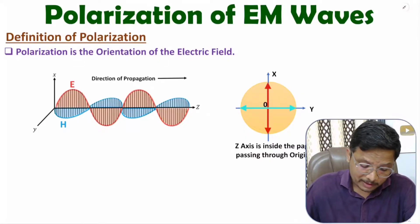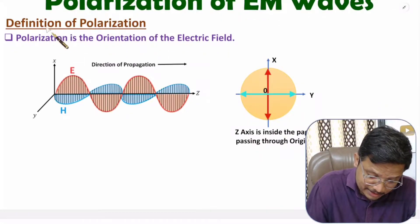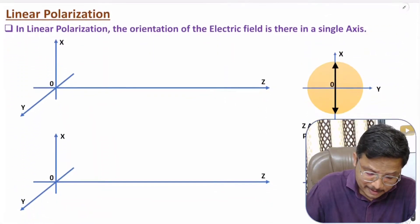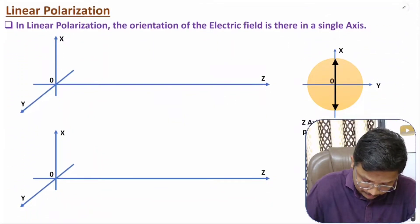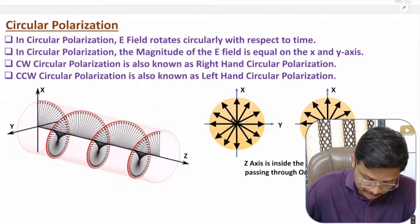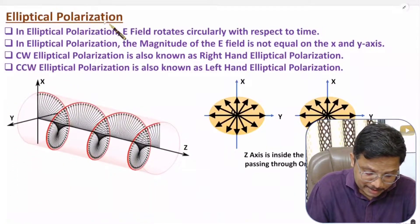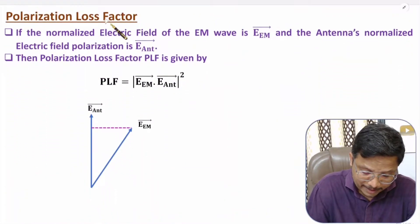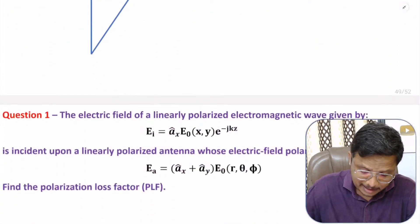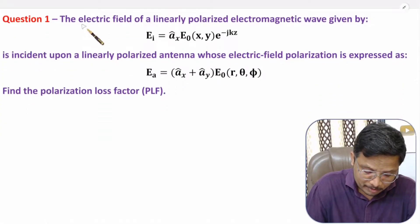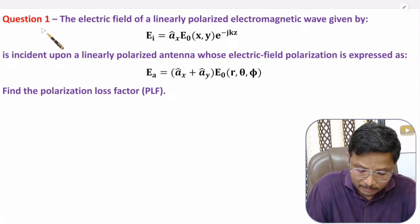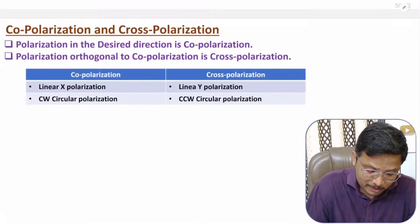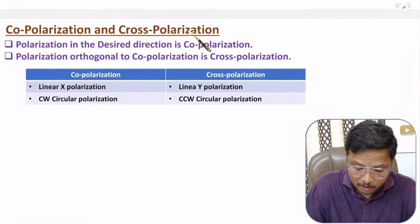First of all, I will define polarization. After that, I will explain different types of polarizations like linear polarization, circular polarization, and elliptical polarization. After that, I will explain polarization loss factor, and based on that I will be solving one problem, which is considered from C.A. Balani's book. And at last, I will explain co-polarization and cross-polarization.